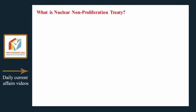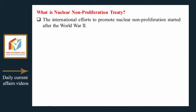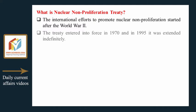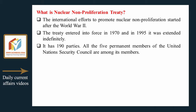What is the Nuclear Non-Proliferation Treaty? The international efforts to promote nuclear non-proliferation started after World War II. The treaty entered into force in 1970, and in 1995 it was extended indefinitely. It has 190 parties, and all five permanent members of the United Nations Security Council are among its members.